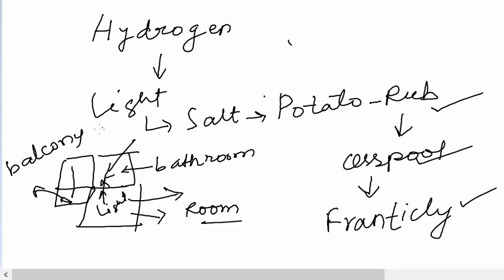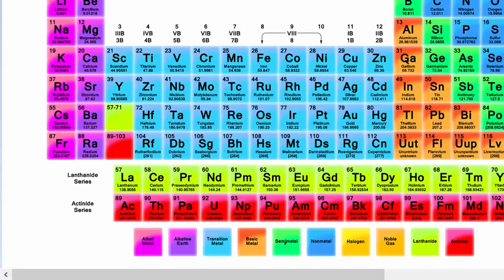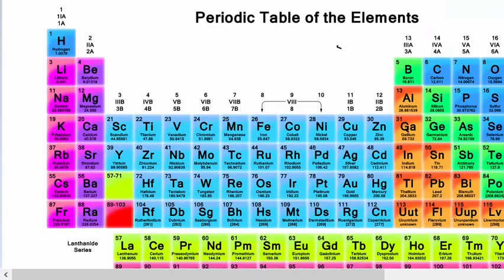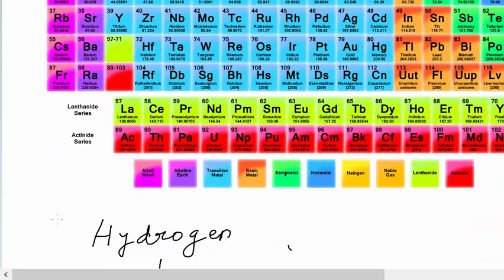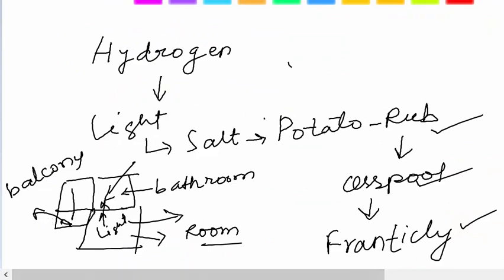So first we have hydrogen light lithium. Then we have salt for sodium. Then for potato we have potassium. Then you are rubbing rubidium. Then there is a cesspool that you are trying to clean by rubbing. That is cesium. And lastly you are rubbing it frantically. You are in a hurry. So it is francium. So this way if you incorporate these elements in a whole new story. You give it a whole new architecture that you are doing something with all of them. So you will be able to remember it forever.